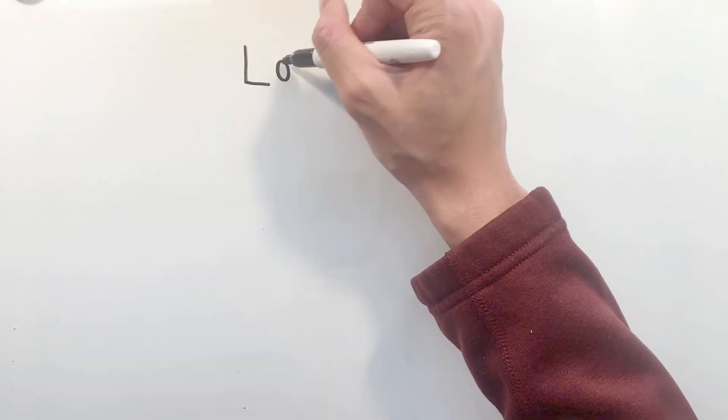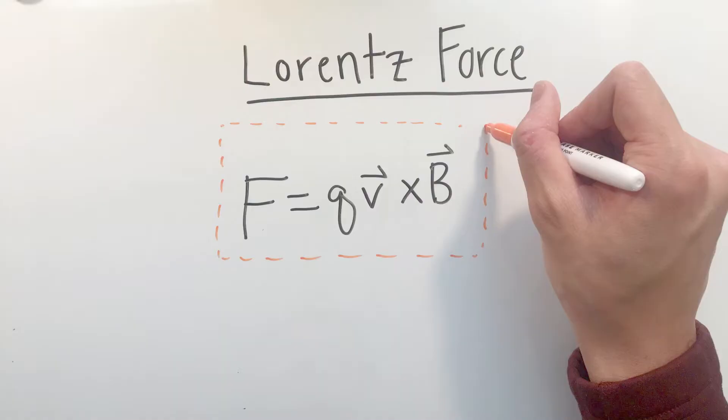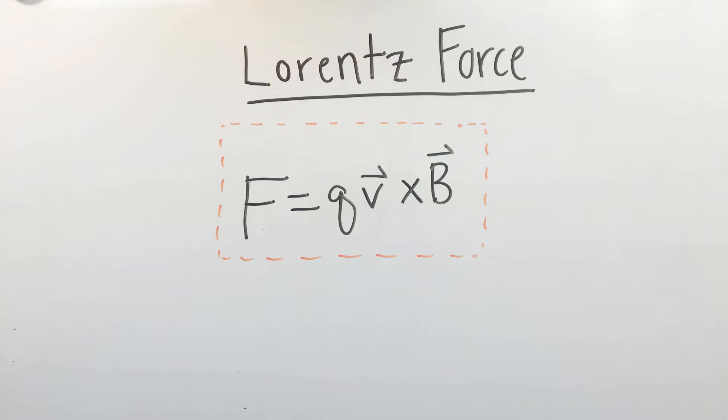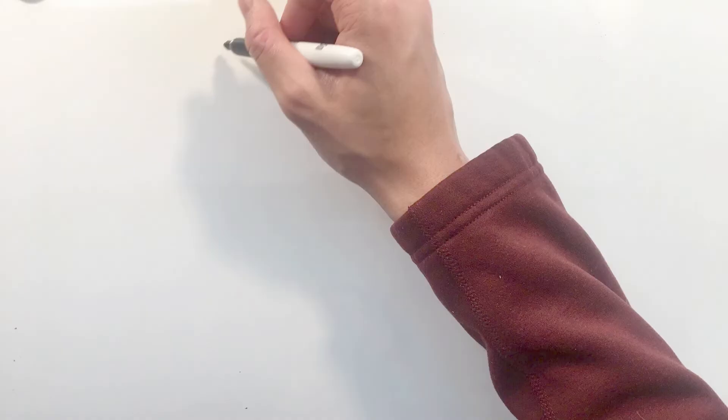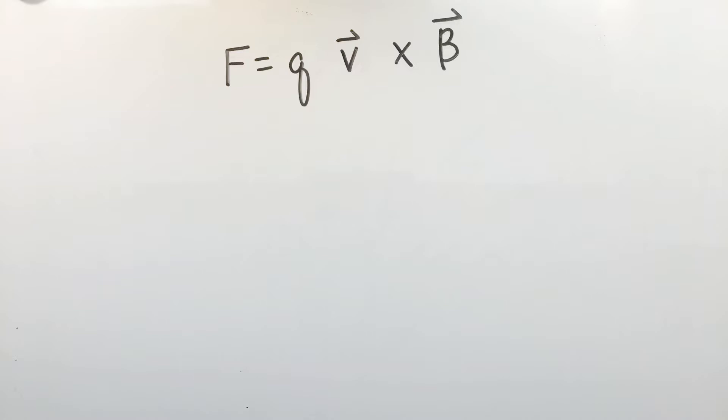One type of magnetic force is known as a Lorentz force, and it deals with charged objects moving through magnetic fields. The equation for this force is that the Lorentz force equals the charge of the object times the cross product of its velocity and the surrounding magnetic field. While this equation may seem simple at first, there's a couple of important components and applications when it comes to the Lorentz force.